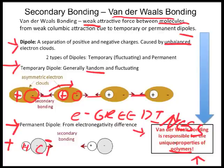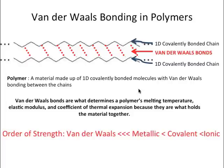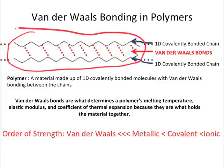Van der Waals bonds caused by temporary dipoles are generally weaker than those caused by permanent dipoles. Van der Waals bonds are what hold a polymer together — between the 1-D covalently bonded chains, van der Waals bonding occurs and acts as glue between the chains. Importantly, van der Waals bonds are what determine a polymer's melting point, coefficient of thermal expansion, and elastic modulus.